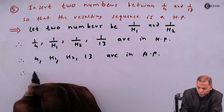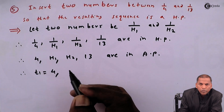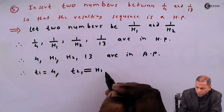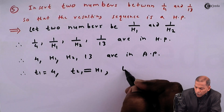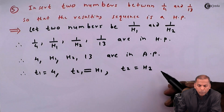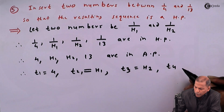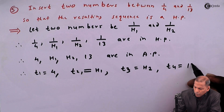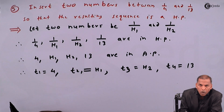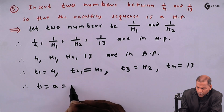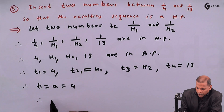Therefore, for the AP, the first term t1 is equal to a. We have t1 equal to a equal to 4. So in this way we get the value of a equal to 4.